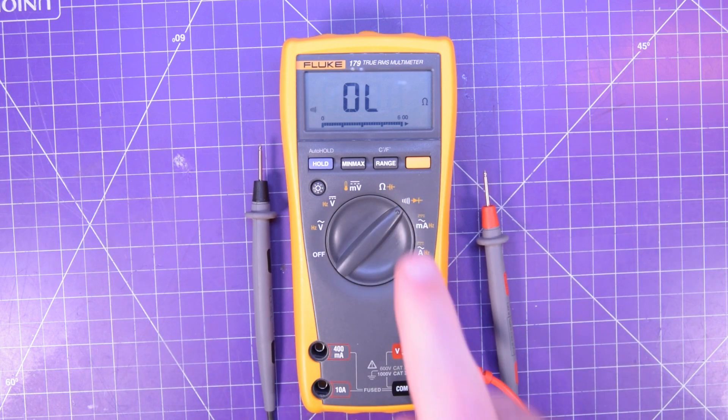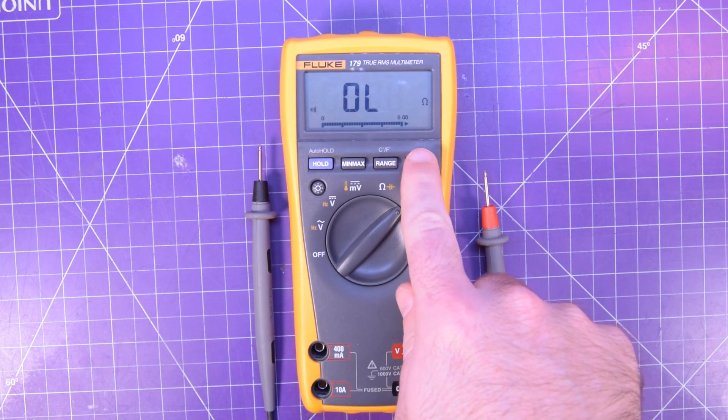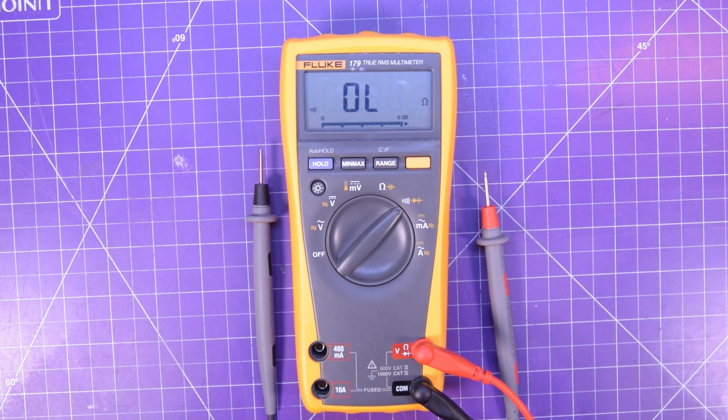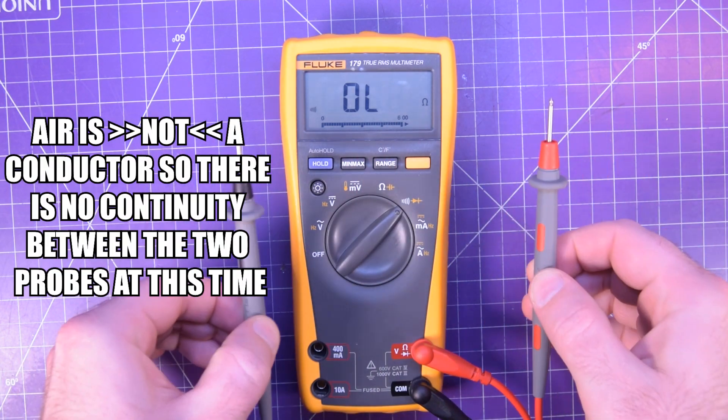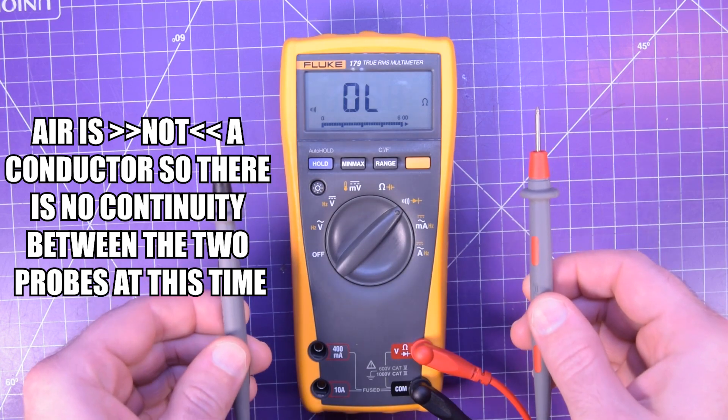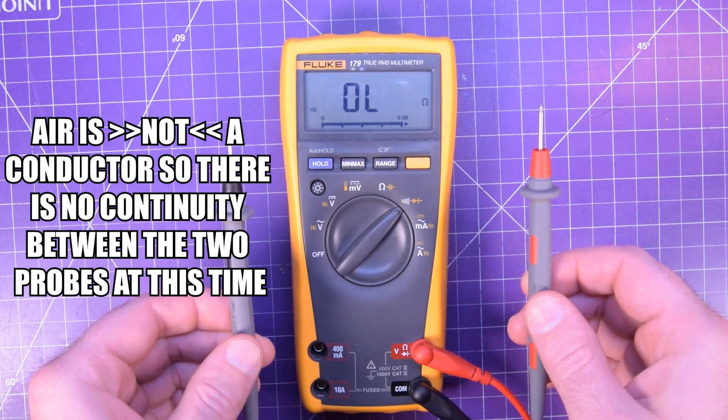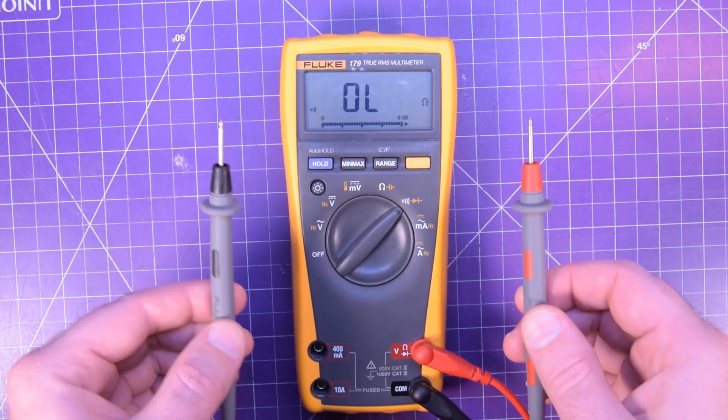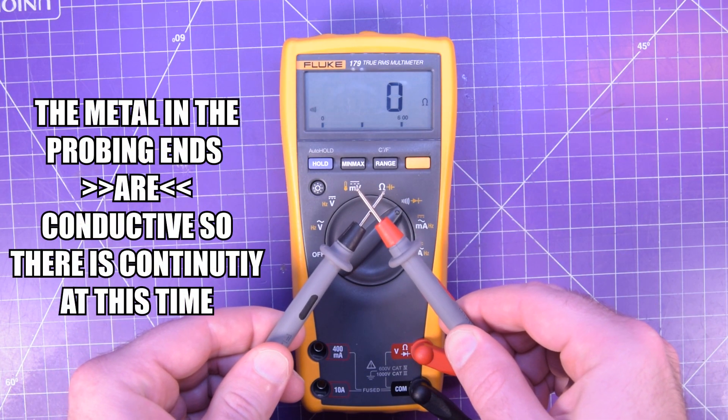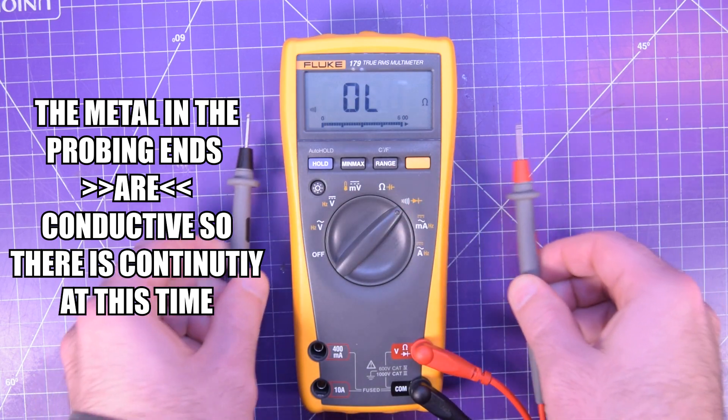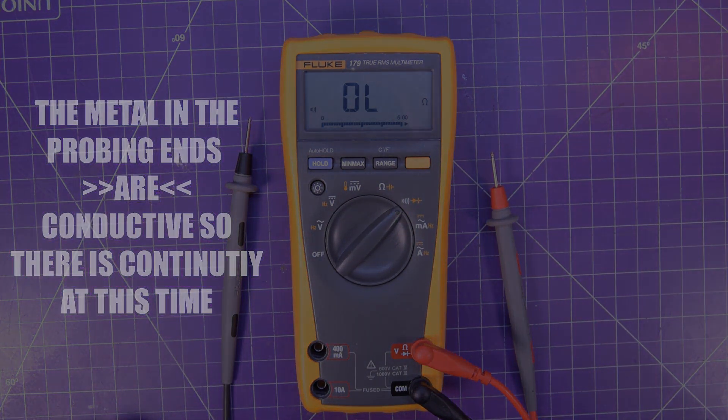Keep in mind that sometimes you'll have to hit the second function or function button until the sideways Wi-Fi symbol appears on the screen. Without the probes touching, take note of what your screen reads. This is the reading you'll get if your conductor is not continuous, there is no continuity between the two probes. Then touch your probes together and see what your multimeter reads and what it does. Most of them have an audible sound. This tells you that there is continuity between the two probes.